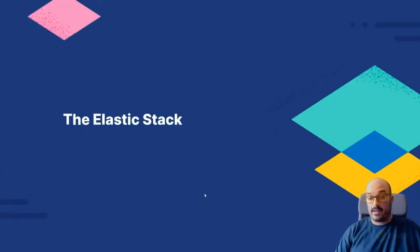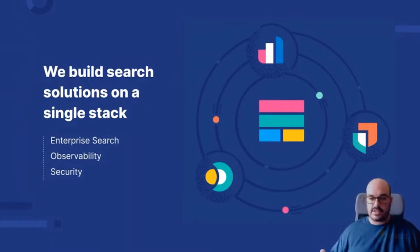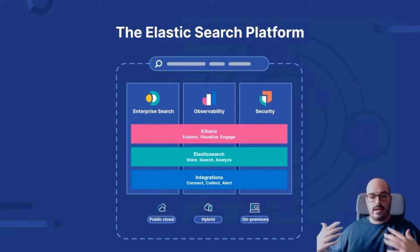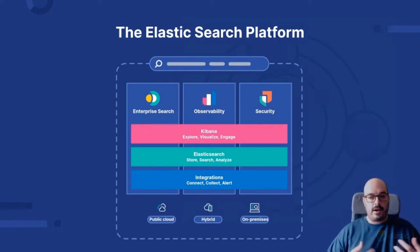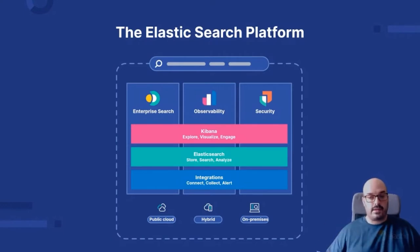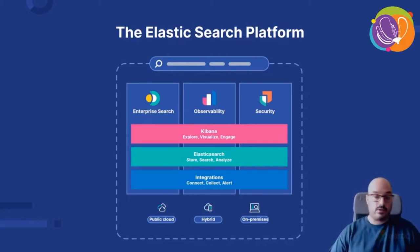The Elastic company develops three families of products for three different verticals: enterprise search, observability, and security. They are all created on top of the same single stack. The main component is Elasticsearch, the NoSQL search engine that helps you store and analyze large amounts of data. There is a family of products to ingest data, and finally Kibana, a web application that helps to visualize, explore, and even manage the full stack.